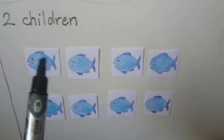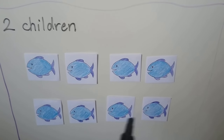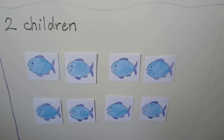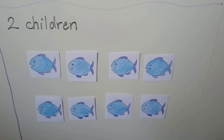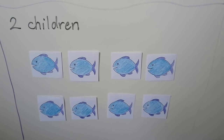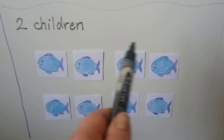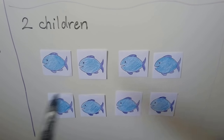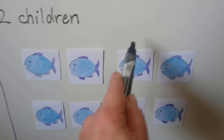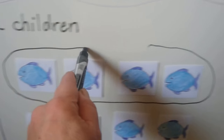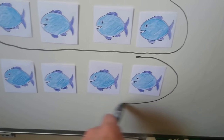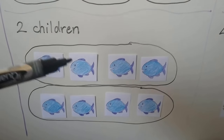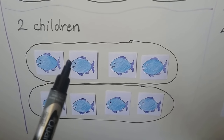Now we have two children and we have one, two, three, four, five, six, seven, eight fish. We need to circle each child's fair share. I can circle the top part, which is four, and then I can circle the bottom part, which is four. We can give these four to one child and these four to the other child. There are two children, two groups, and their fair share is four each.